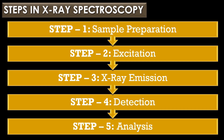There are five steps in X-ray spectroscopy. The first step is sample preparation: clean and prepare the sample to ensure it is suitable for X-ray exposure. The second step is excitation: the sample is irradiated with high energy X-rays or electrons, which eject inner shell electrons from atoms in the sample.